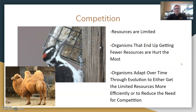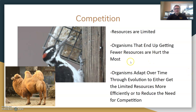When we break down why competition occurs, resources are limited. There's only a certain amount of food, water, and other types of shelter and things essential for organisms on planet Earth. Organisms that end up getting fewer resources are hurt the most — if you're not getting what you need in terms of food and water, you're going to suffer consequences. You could die in the natural world from that.